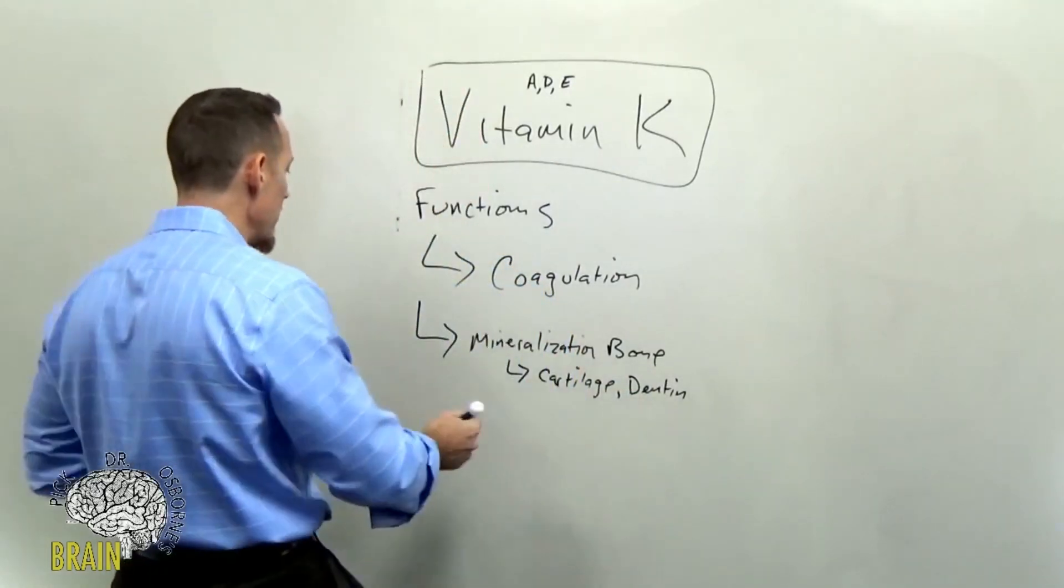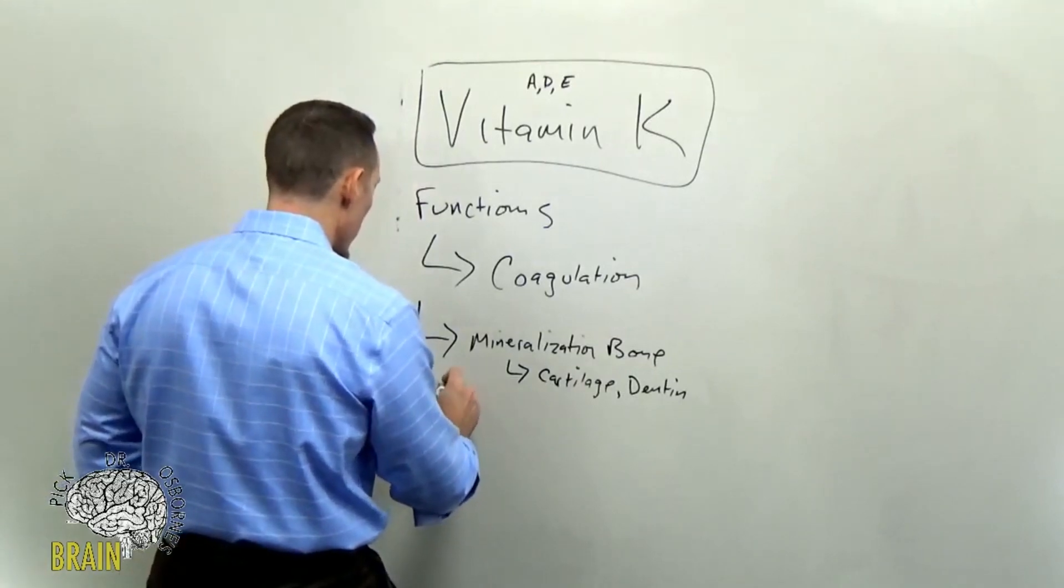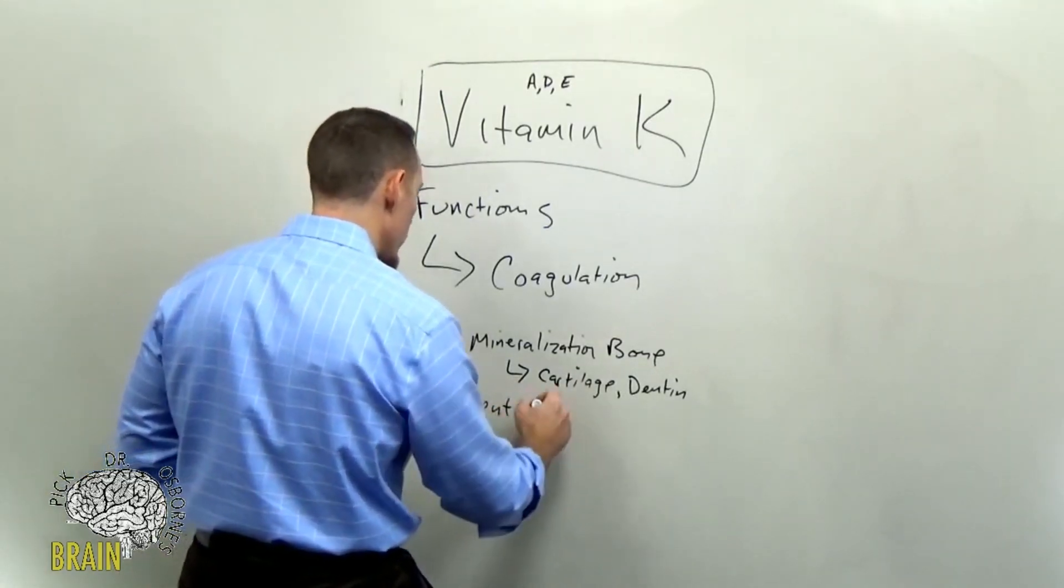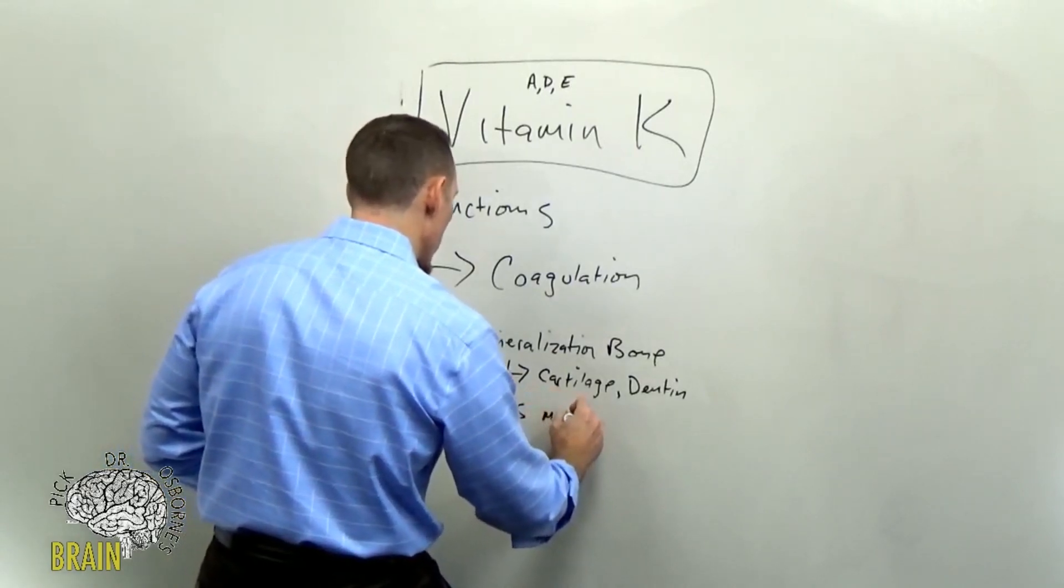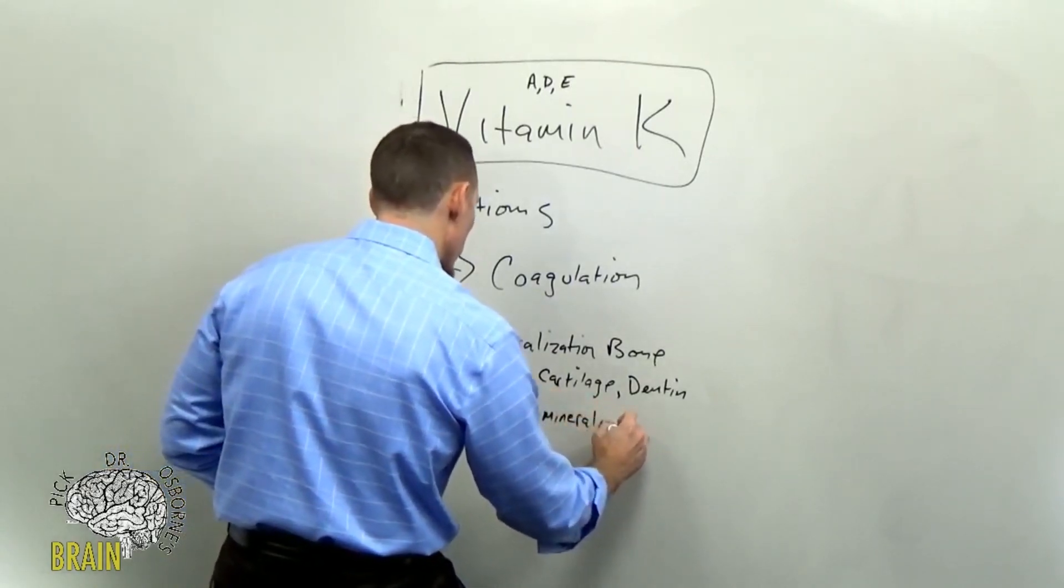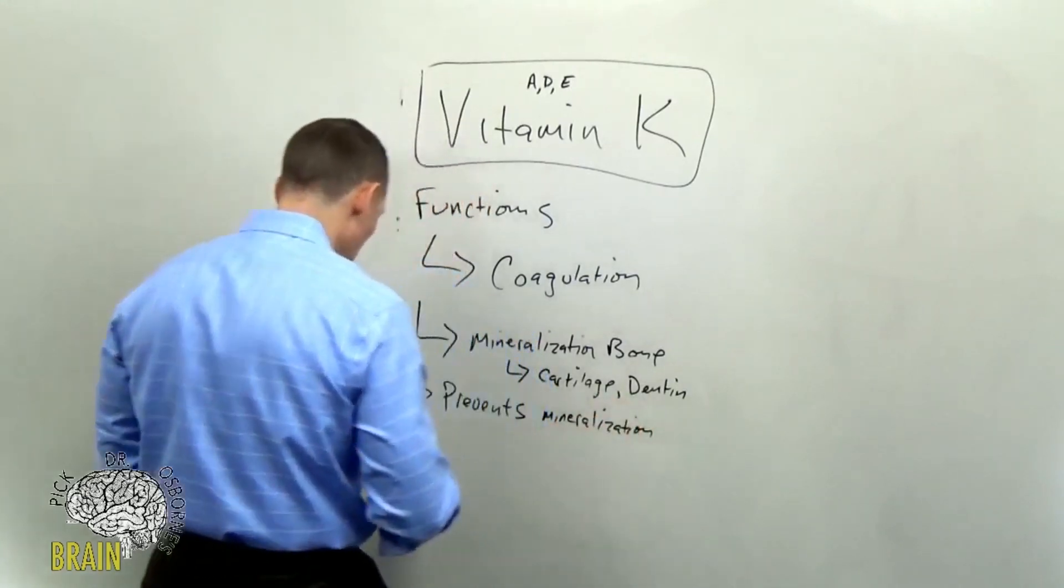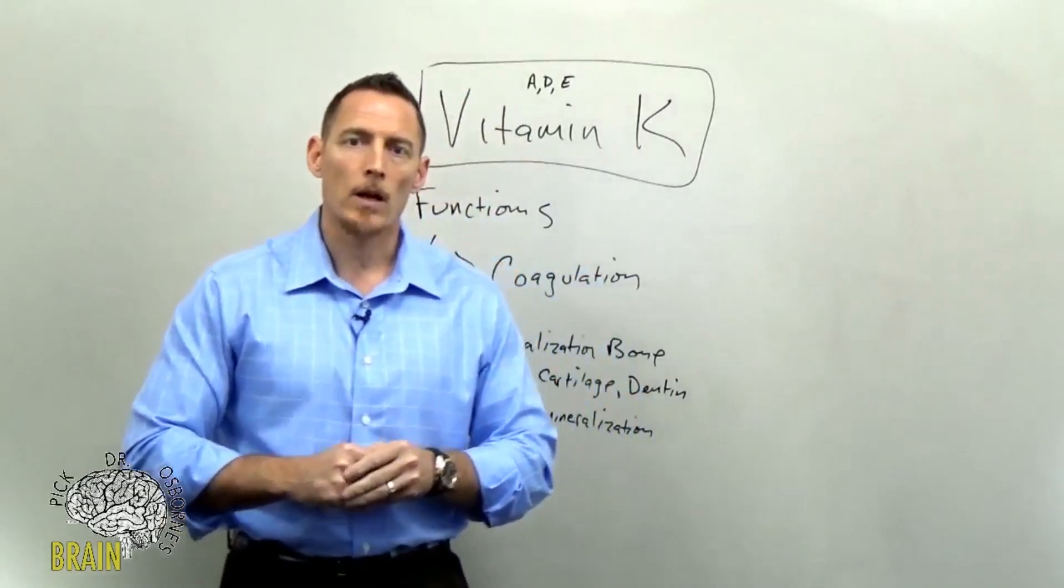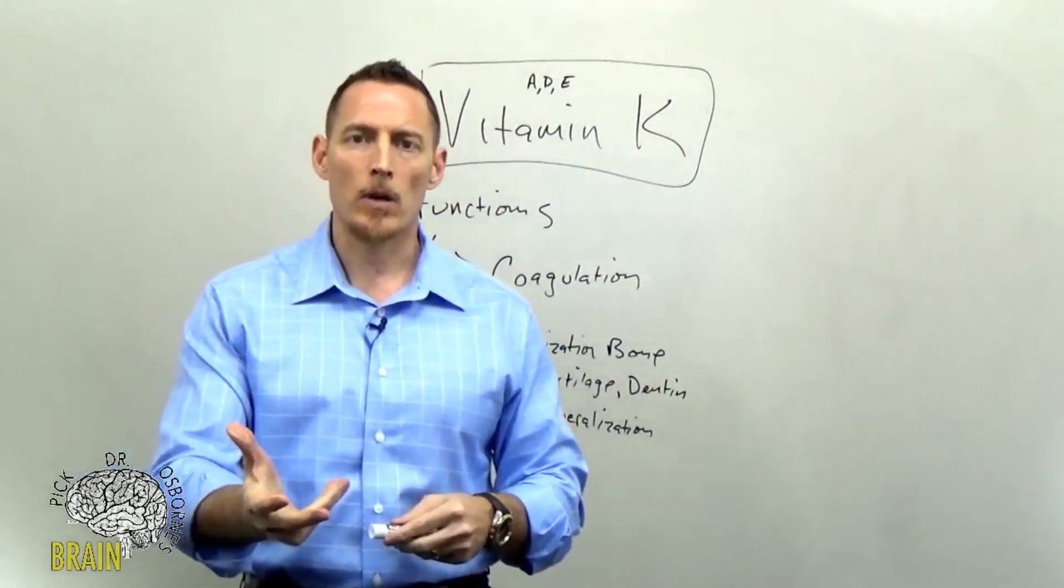Now, one of the other functions of vitamin K is that it prevents, just like it helps to put minerals in your bone, it prevents mineralization of your soft tissue. What does that mean? Well, I'm going to put a picture up here on the screen for you and kind of give you an example of kind of a classic example of what I mean by this.